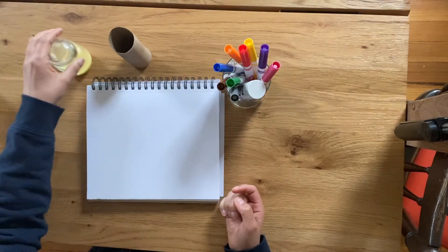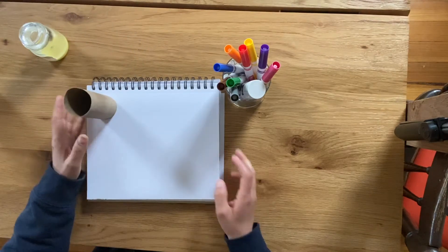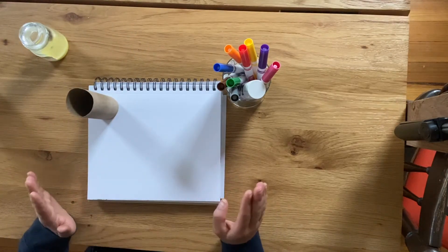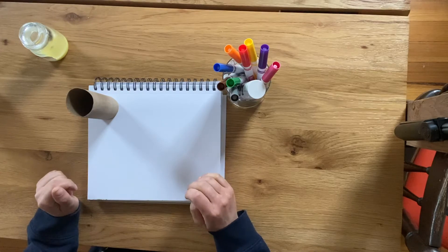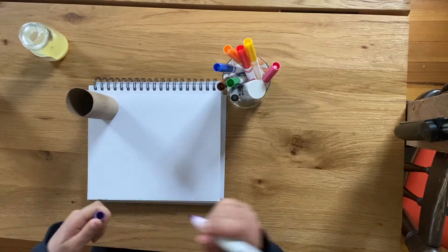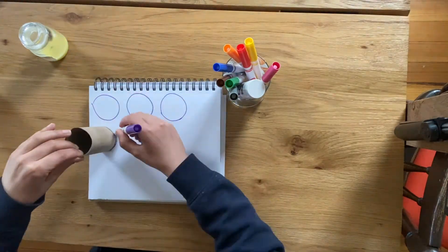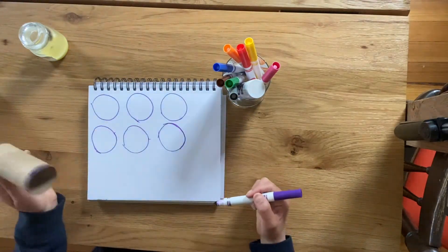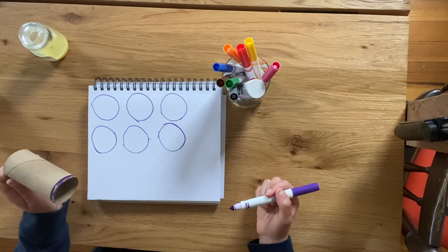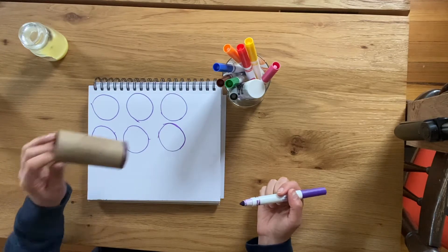So I'm going to choose to use a toilet paper roll to trace and the first thing I'm going to do is I'm going to draw as many circles as possible. You can use any color you want. Mine are not perfect and that is okay. You can also ask your adult to help you.